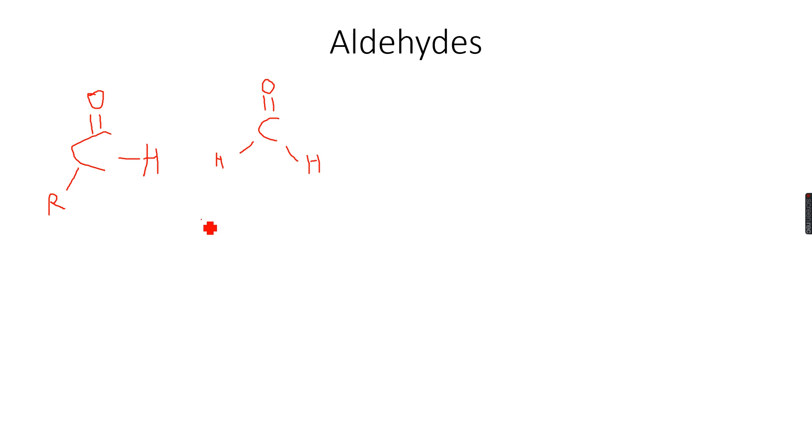This is called methanal. I am writing the spelling over here. The meth comes because of the single carbon atom. You know that when there is one carbon atom we start the naming with meth and then we put ANAL, so methanal. And then if we have two carbon atoms it would become...